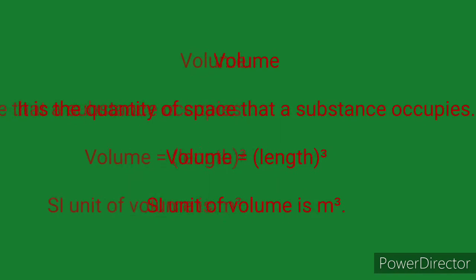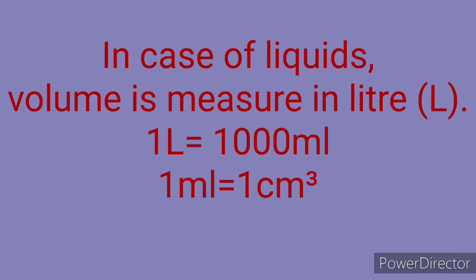Volume is the quantity of space that a substance occupies. Volume is measured by length cubed, and the SI unit of length is the meter, so the SI unit of volume is meter cube. If we measure the volume of a liquid, we use liters. 1 liter is equal to 1000 mL, and 1 mL is equal to 1 centimeter cube. Note that liter is not an SI unit.